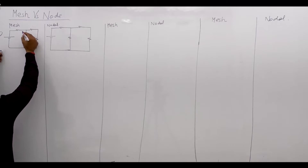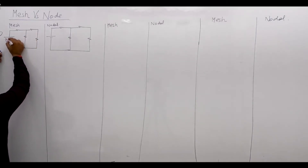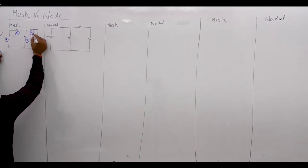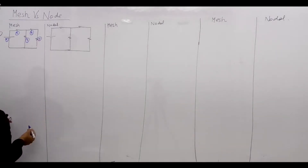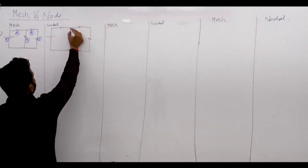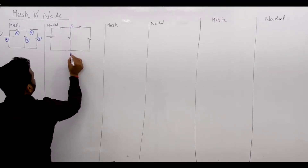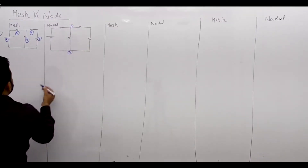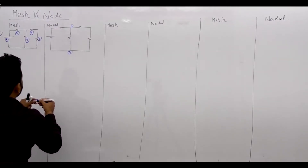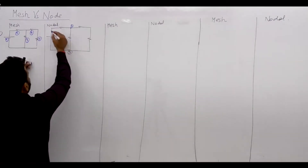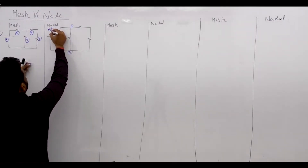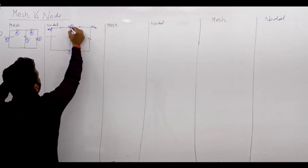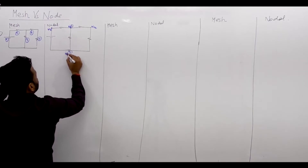In this question, we have branch number 1, branch number 2, branch number 3, branch number 4, branch number 5. Similarly, node 1 and node 2, and all others are simple nodes — Ns1, Ns2, and principal nodes Np1, Np2.